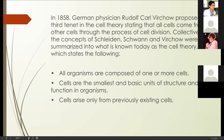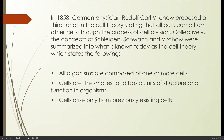They observed that cells reproduce by themselves. How can cells reproduce? This is through the process of cell division. Cell division is divided into two types: mitosis, or somatic cell division, which involves a complete set of chromosomes, and meiosis, or meiotic cell division, which is the reproduction of gametes — sperm and eggs. Collectively, the concepts of Schleiden, Schwann, and Virchow were summarized into what is known today as cell theory. Please memorize the three statements.